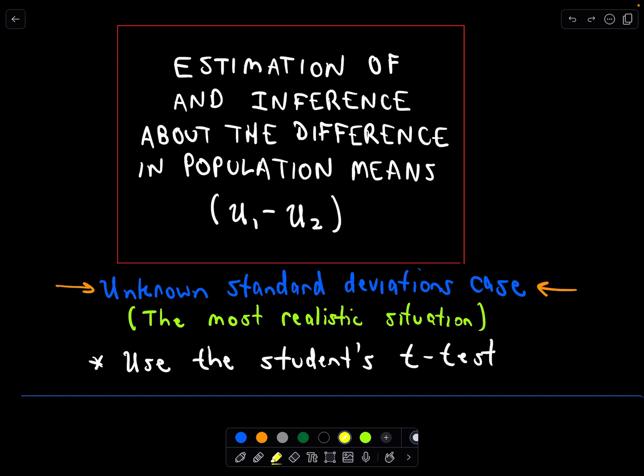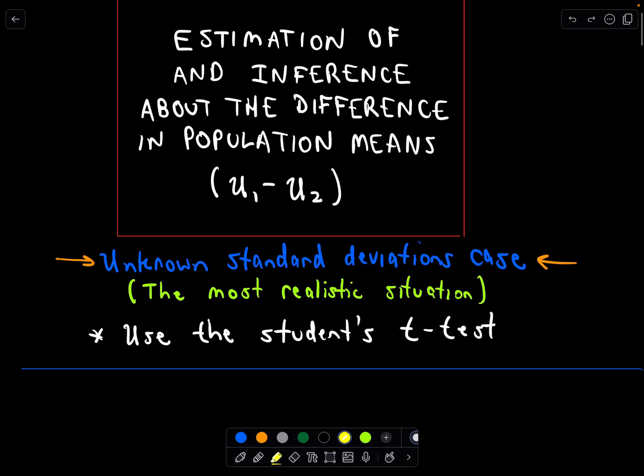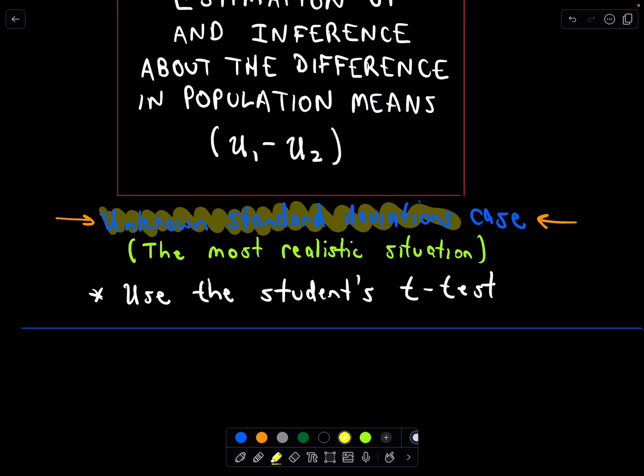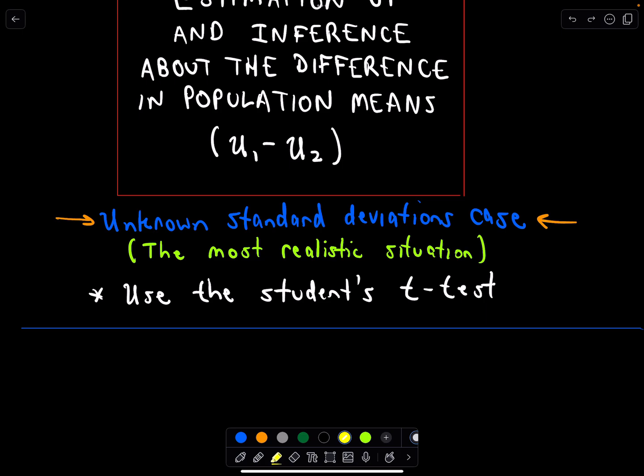I will step through this a little bit faster if you've done some of these hypothesis tests. You'll see it's really largely a lot of the same approach. In this example I'm going to look at the case where we have unknown standard deviations, and this is certainly the most realistic situation you would encounter because typically we just simply don't know what the standard deviations are. So in this case we're going to use the student's t-test.